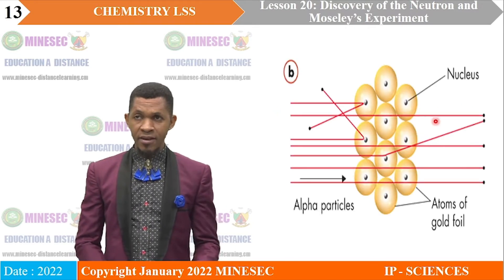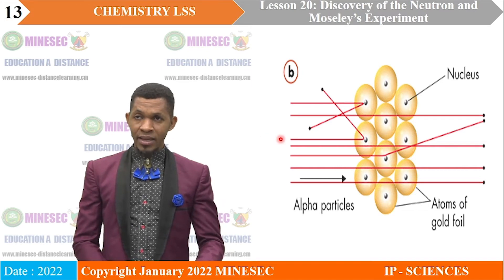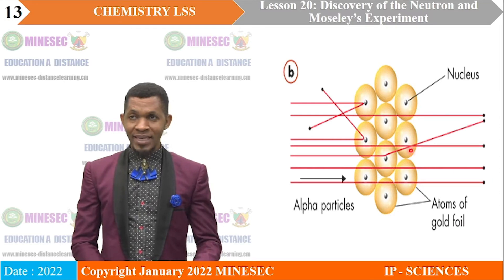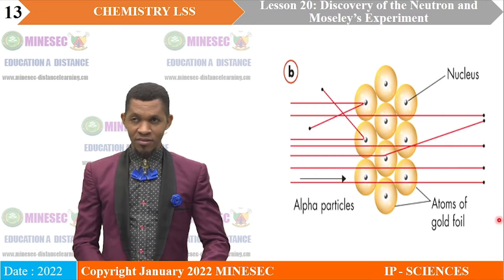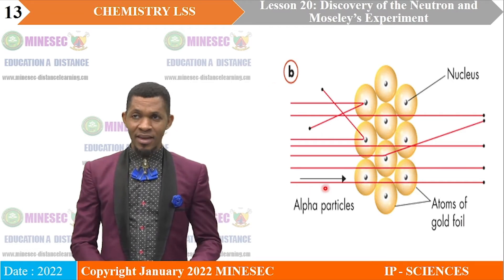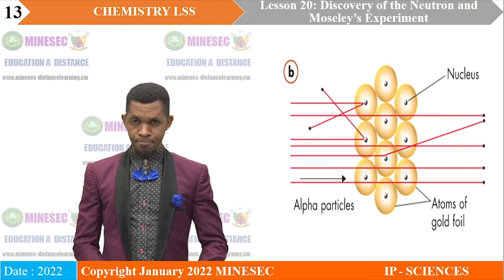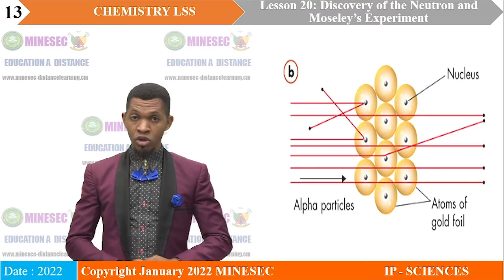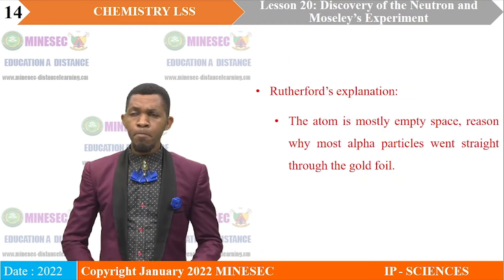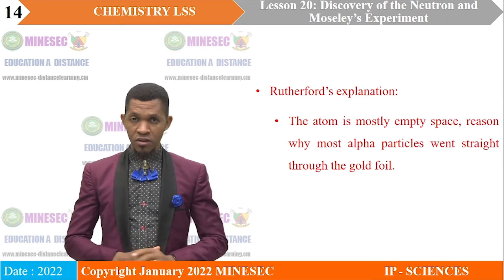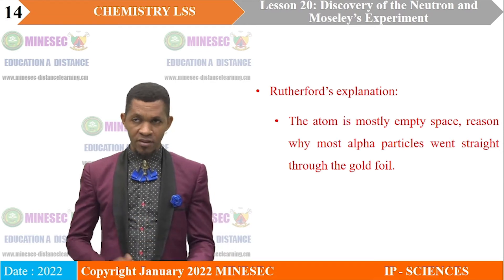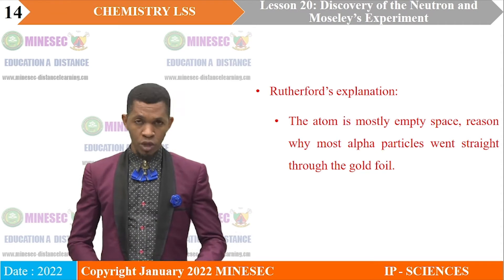Looking at the setup again: most alpha particles passed through undeflected, some were deflected at large angles, and some bounced back at the gold atoms. The fact that some bounced back and some were deflected at large angles was a problem, because the prevailing theory based on the plum pudding model could not explain this. Rutherford came up with the following explanations: the atom is mostly empty space, which is why most alpha particles went through the gold foil.